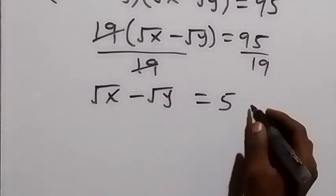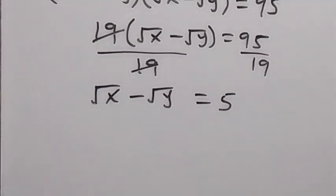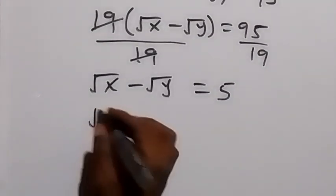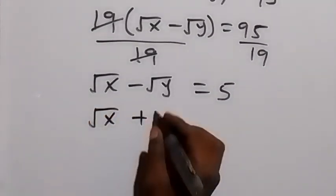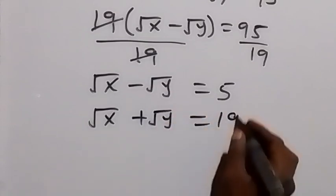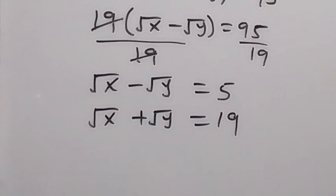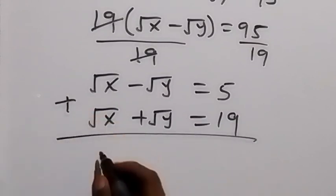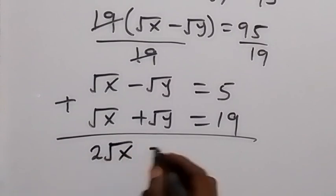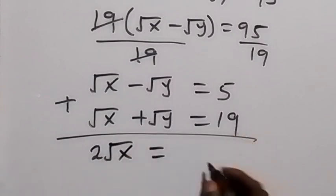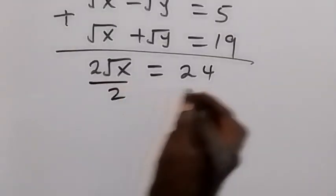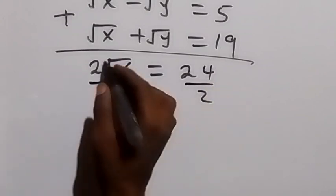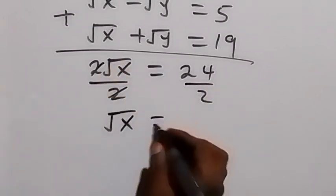And here, let's combine this with equation 2. That is, from equation 2 we have root x plus root y equals to 19. Now, when we solve these two equations, we can do so by eliminating root y. We add the two equations: we have 2 root x equals to 5 plus 19, which gives us 24. Then we divide both sides by 2, and 2 cancels, giving us root x equals to 12.